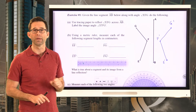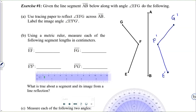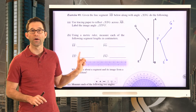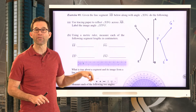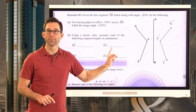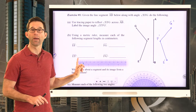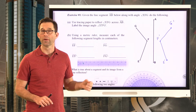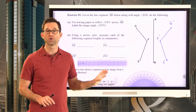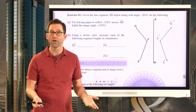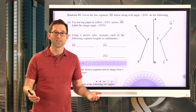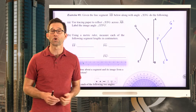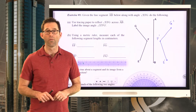Letter B: using a metric ruler, measure each of the following segment lengths in centimeters — EF, FG, E prime F prime, and F prime G prime. Measure to the nearest tenth of a centimeter. EF is pretty much exactly five centimeters. FG is approximately 4.2 centimeters. Note that your measurements may differ slightly due to photocopying.